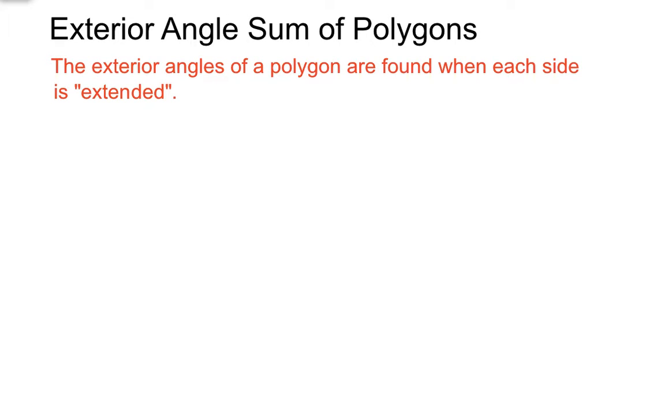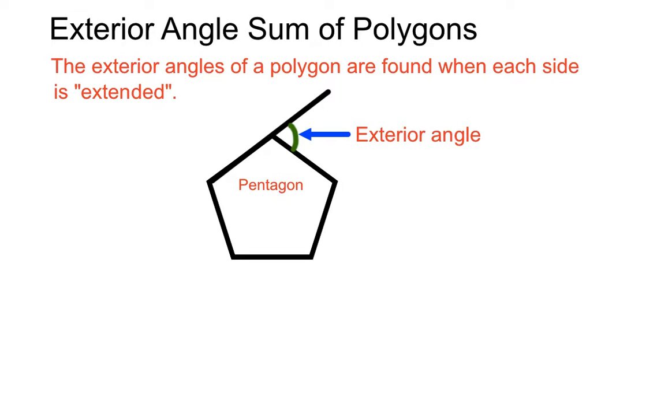Let's figure out what the exterior angle of a polygon is. Exterior angles are found when each of the sides of the polygon is extended. I'll show you on a diagram here. We have a pentagon. If we extended each of those sides past where the sides meet the next side along, we can have an extension there. And the angle created by that little extension we call an exterior angle.